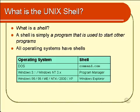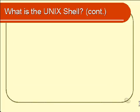Later versions of Windows such as Windows 95, 98, and 2000 use a program known as Windows Explorer. That's the program responsible for putting the icons on your desktop and also for putting the Start button in the lower left-hand corner of your screen. Anyway, let's talk a bit more about the Unix shell in particular.